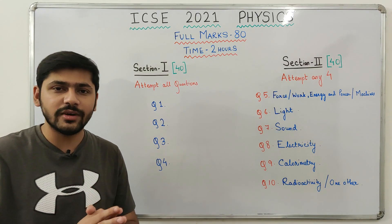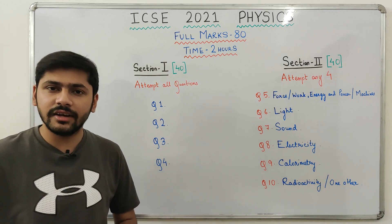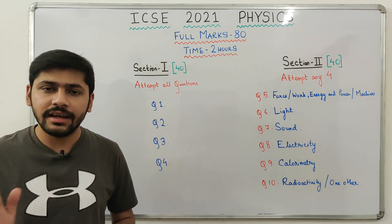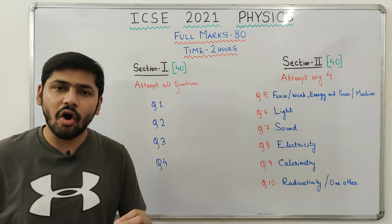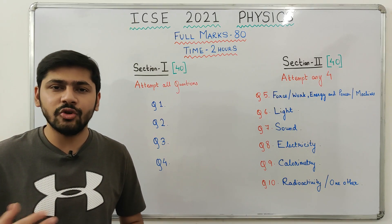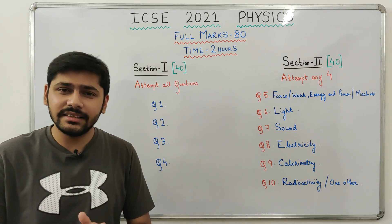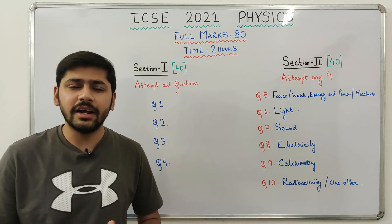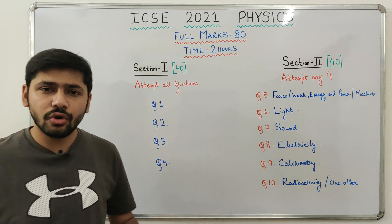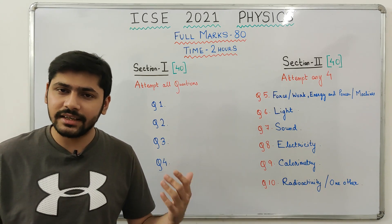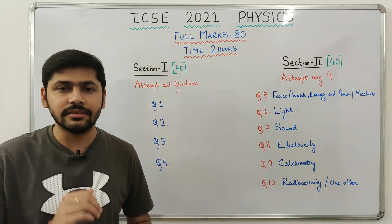In Section 2, you will face long question-and-answer and concept-based questions. These include long explanations, big diagrams that require a lot of construction time, and long numericals with big calculations. If you have looked at physics papers since 2016 or 2017, many questions are concept-based, especially in Section 2. To score full marks, you need a good grasp and great understanding of all topics.